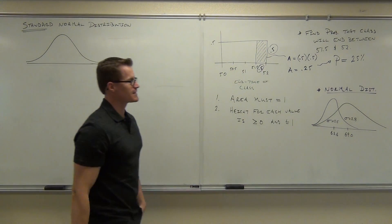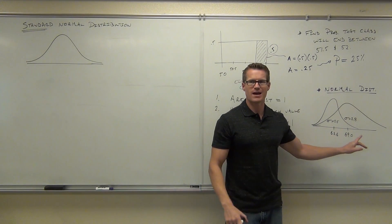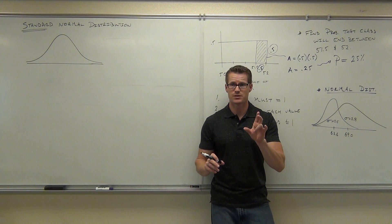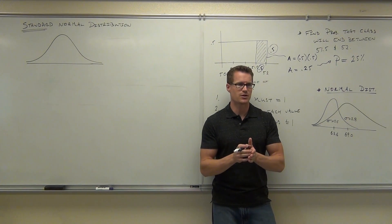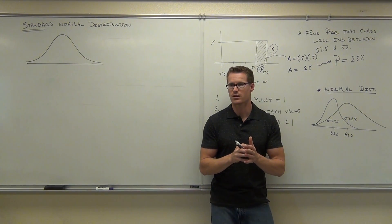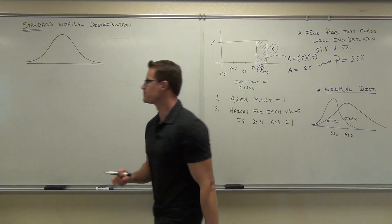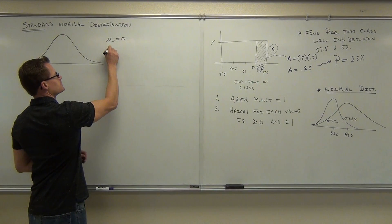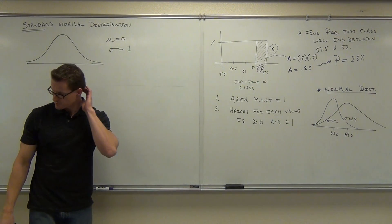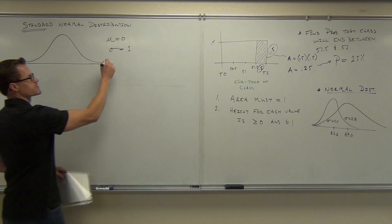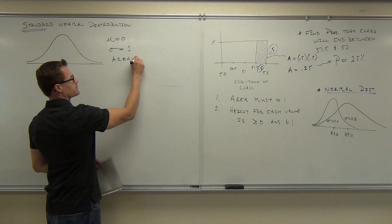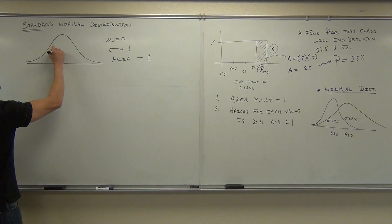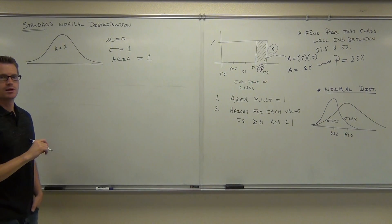Here's how the standard normal distribution works. For every situation you would ever encounter — an infinite number of them — you'd have a different mean, or if not a different mean, probably a different standard deviation. The spread and the means are going to be different. So it says: I'm going to simplify it by forcing the mean to be equal to zero, and the standard deviation to be equal to one. I'm also going to force the area under the curve to equal one.